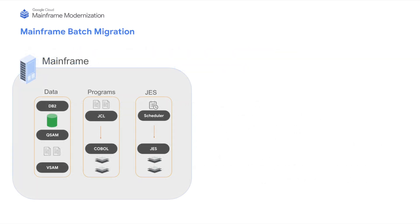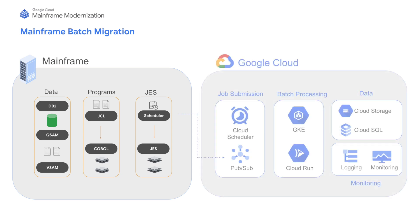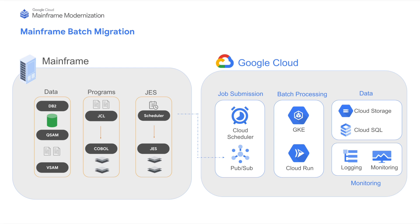Here, we can see an illustration of the app components on the mainframe and in Google Cloud after it is modernized with Google Cloud Mainframe Refactor. On the left, we see a mainframe hosting a COBOL application that uses DB2, QSAM, and VSAM files. The COBOL programs are invoked from JCL, and the scheduler is responsible for submitting the JCL jobs.